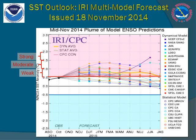In forecasting El Niño conditions, we look at numerous dynamic and statistical models keen on the sea surface temperature anomalies in our vital Nino 3.4 region. By utilizing many model solutions, we can visualize the spread and average of all the models to get a sense of the possible outcomes and most likely outcomes.